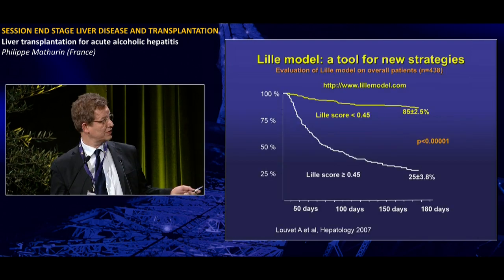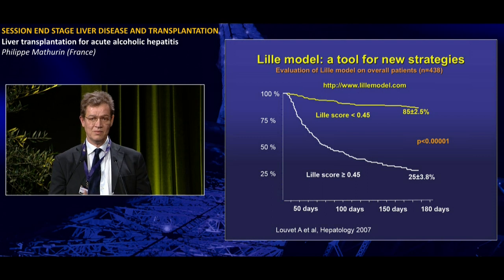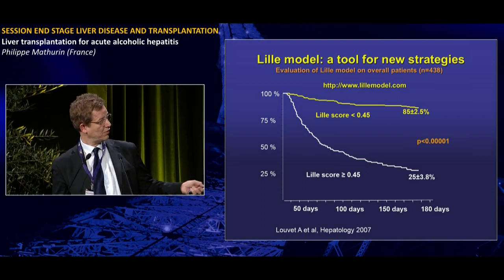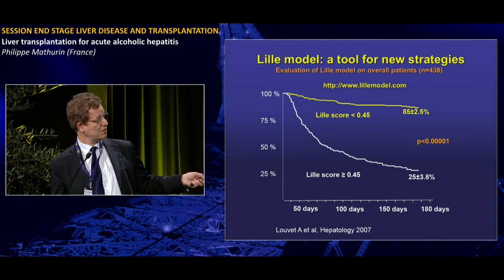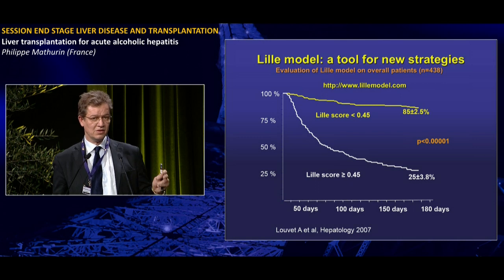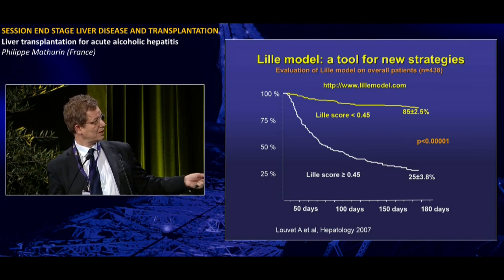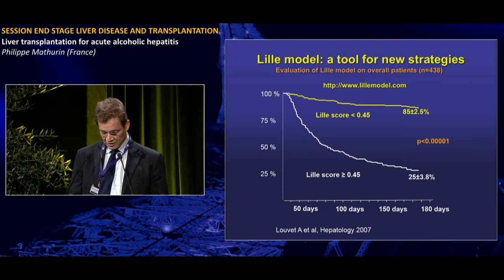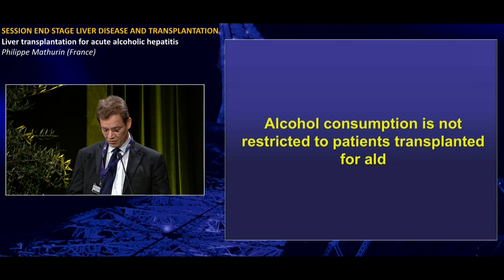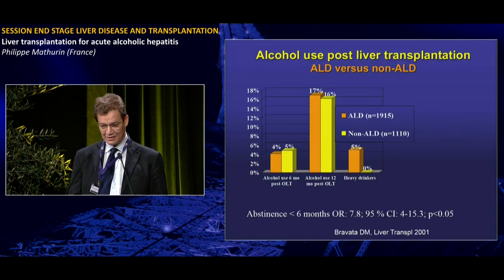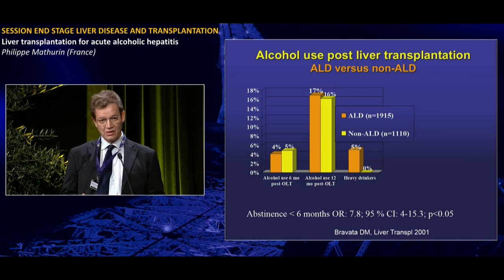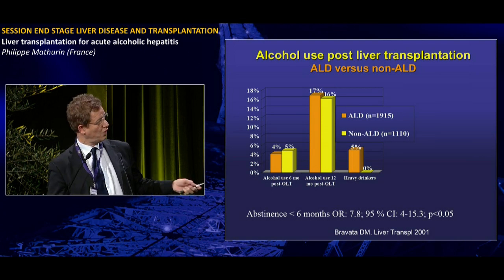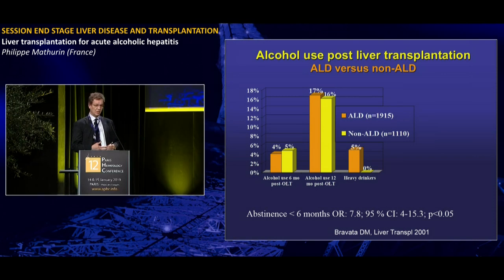We know that patients not responding to medical therapy at early times are those who need to be considered for additional therapy. Using a score calculated after seven days of therapy, patients classified as non-responders have a very poor outcome. Regarding liver transplantation for alcohol liver disease, we always discuss alcohol relapse, but among patients transplanted for non-alcohol-related disease, there is no significant difference in alcohol use before and after transplantation.